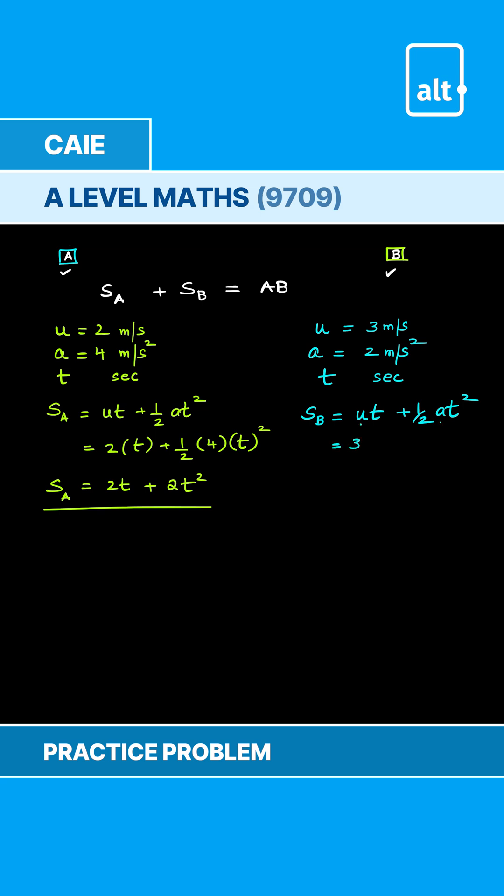So therefore, this is 3 multiplying with t plus half into 2 into t square which simplifies to 3t plus t square. This is the expression for displacement of B.